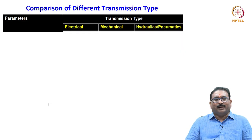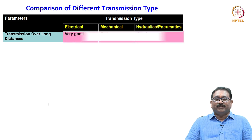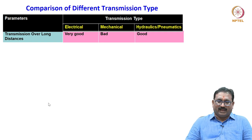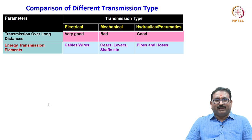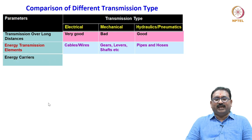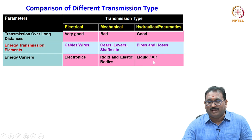Now we will quickly see the comparison of different transmission types: electrical, mechanical, hydraulics, and pneumatics. For transmission over long distance, electrical is very good, mechanical is bad, and hydraulics is good compared to mechanical. For energy transmission elements, electrical uses cables and wires; mechanical uses gears, levers, and shafts; hydraulics uses pipes and hoses. For energy carriers, electrical uses electrons; mechanical uses rigid and elastic bodies; hydraulics uses liquid and pneumatics uses air.